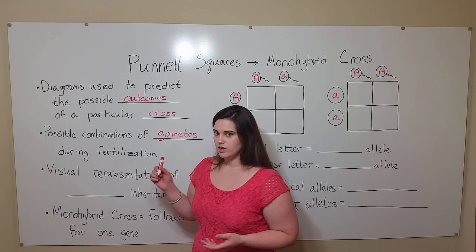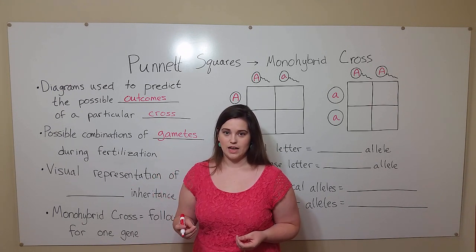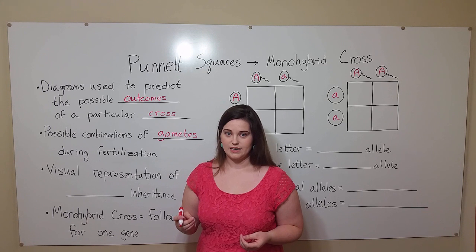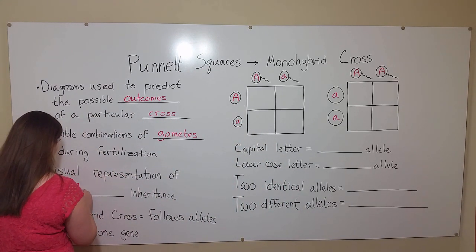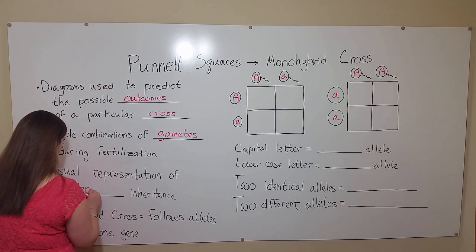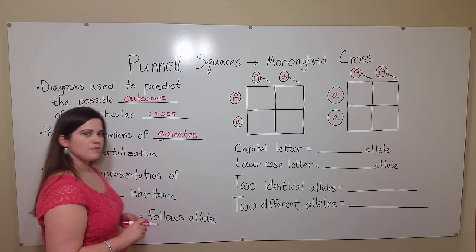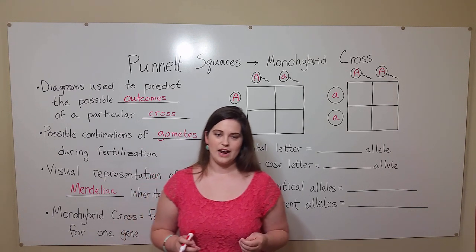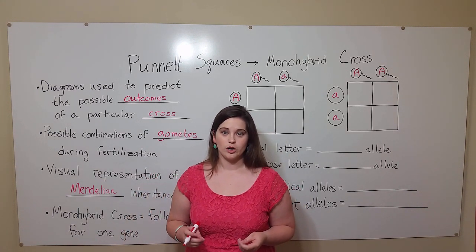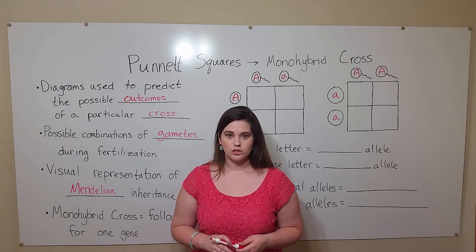Punnett squares are useful because they are visual representations of Mendelian inheritance. Mendelian inheritance are the patterns of inheritance elucidated by Gregor Mendel. These include the law of segregation and the law of independent assortment.